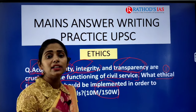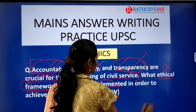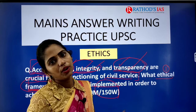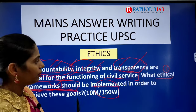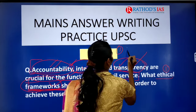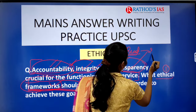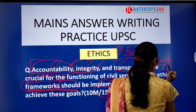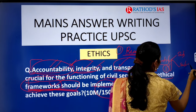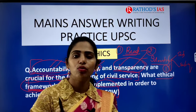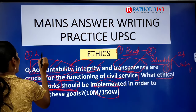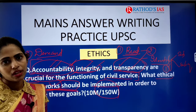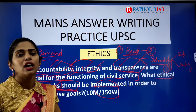Many students start by writing what accountability, integrity and transparency are, adding examples under each. But if you write only about those concepts and not about the ethical framework, you will get zero — whatever work you did in the examination hall will go in vain. So first, read the question at least twice. After reading, identify the number of sub-questions, and think about what the examiner wants from you — the demand of the question.